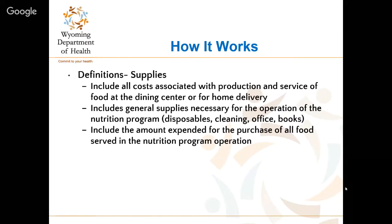The next expense category is Supplies. This is straightforward — any supplies associated with the production and service of food at the dining center or for home delivery meals. General supplies for the operation of the program include disposables, cleaning supplies, office supplies, anything deemed necessary. Also included is the amount expended for the purchase of all foods served in the nutrition program.